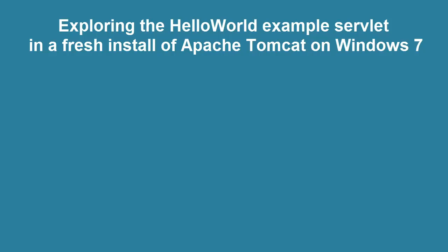This video will provide a quick demo of downloading and installing Apache Tomcat on a Windows 7 laptop. We'll look at the Hello World example servlet in Tomcat, so that you can get a sense of how the Java code in the servlet produces HTML for a web page.